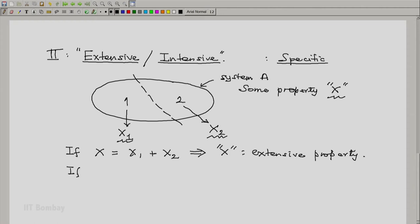If on the other hand, X turns out to be X1 and equal to X2, if all three are equal, then we say that X is an intensive property.